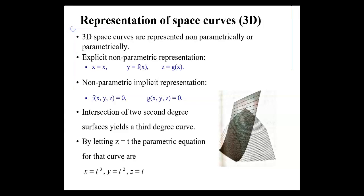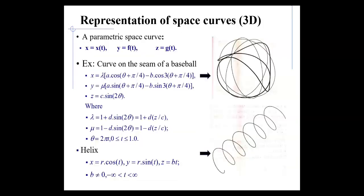In implicit non-parametric representation, when it is not possible to show the closed curve in explicit form, we use the implicit form. For example, a circle's equation is x² + y² - r² = 0, which is an implicit form. This is represented as f(x, y, z) = 0 and g(x, y, z) = 0.